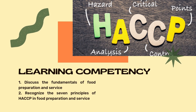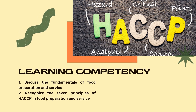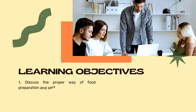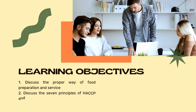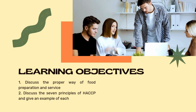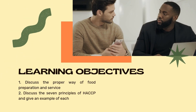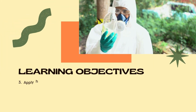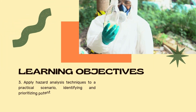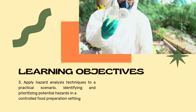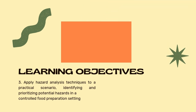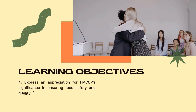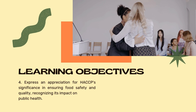Second, recognize the seven principles of HACCP in food preparation and service. The learning objectives: at the end of the lesson, students are expected to discuss the proper way of food preparation and service; discuss the seven principles of HACCP and give an example of each; apply hazard analysis techniques to a practical scenario, identifying and prioritizing potential hazards in a controlled food preparation setting; and express an appreciation for HACCP's significance in ensuring food safety and quality, recognizing its impact on public health.